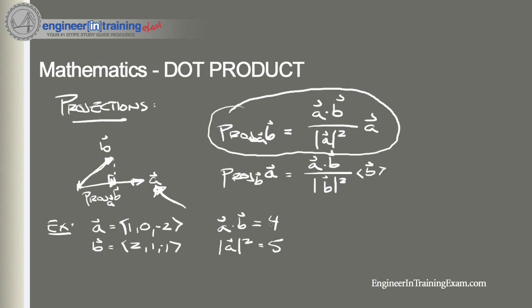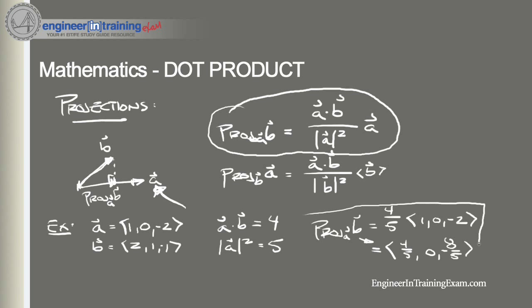Plugging this into our equation, we find the projection of b onto a is equal to four-fifths times the vector 1, 0, negative 2, giving us the new vector: 4/5, 0, negative 8/5. That is our projection of b onto a.